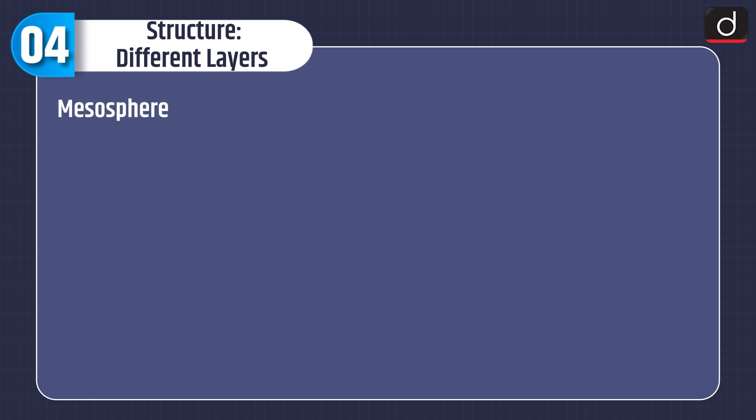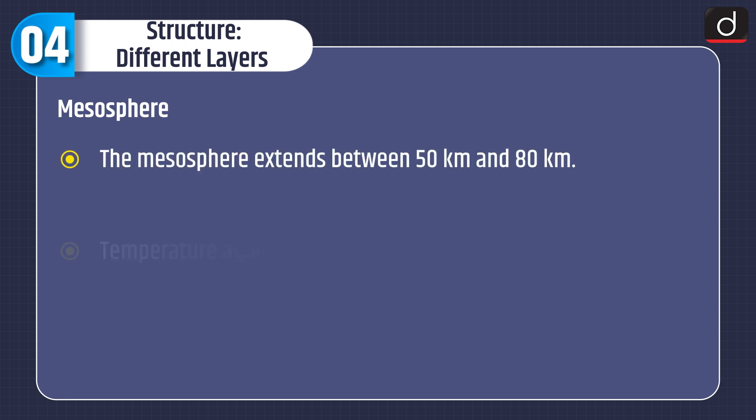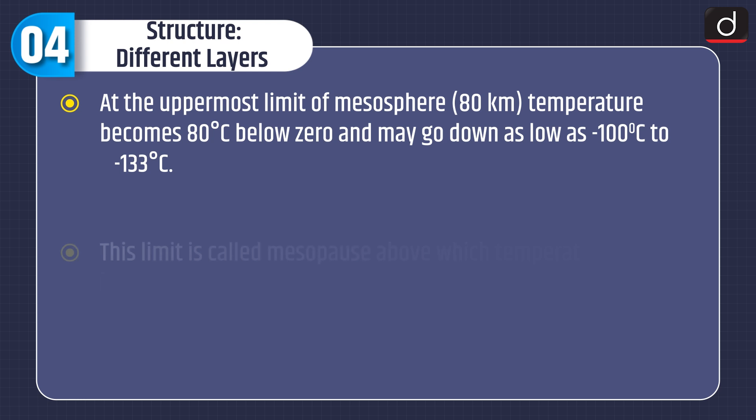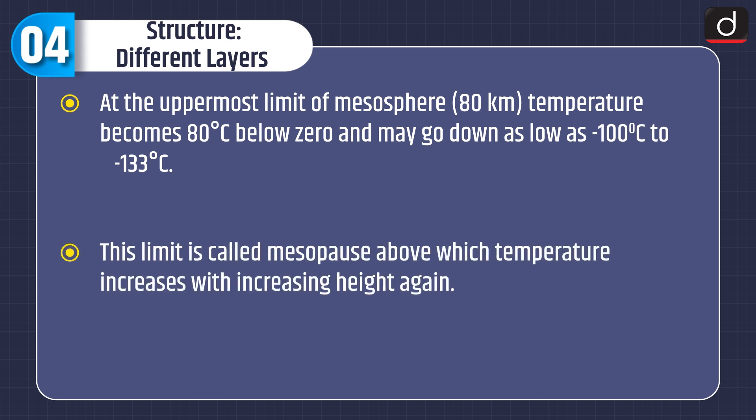Next is the mesosphere. The mesosphere extends between 50 km and 80 km. Temperature again decreases with increasing height. The rise of temperature in the stratosphere stops at the stratopause. At the uppermost limit of the mesosphere, i.e. 80 km, temperature becomes 80°C below 0 and may go down as low as minus 100 to minus 133°C. This limit is called mesopause, above which temperature increases with increasing height again.